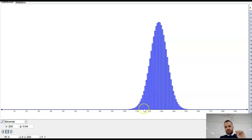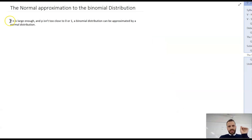So we come to this. If n is large enough and p isn't too close to zero or one, a binomial distribution can be approximated by a normal distribution.